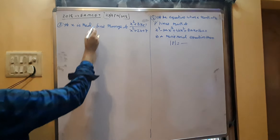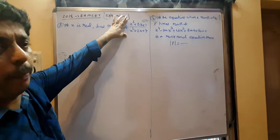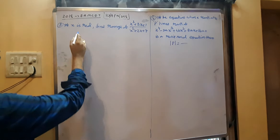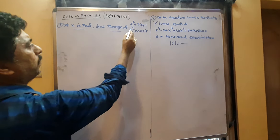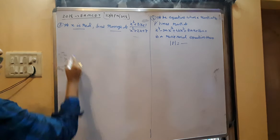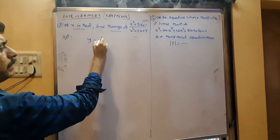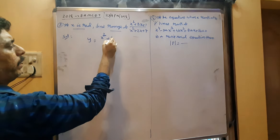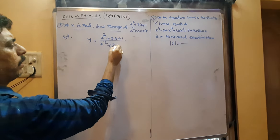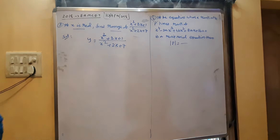This is a model question asked in so many papers. Given x is real, find the range of the fraction. Let y equal to (x² + 2x + 1) / (x² + 2x + 7). Using the regular method, cross multiplying and converting into a quadratic equation.